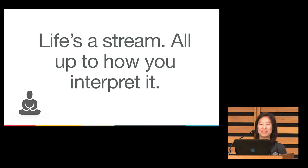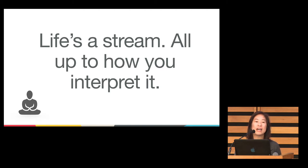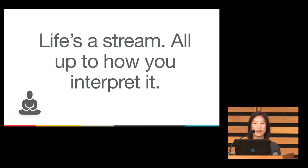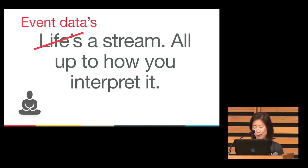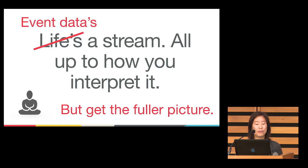Life's a stream — it's all up to how you interpret it. Event data is not about metrics. We've heard about how metrics are created as a result of events in the Make Data Count project, but events themselves are not metrics. The events themselves are metadata adding up to a fuller story. It's about the story that you want to tell — whether that is in a numerical, quantitative form, or in a qualitative form that imputes meaning to the actual metadata that you see. Event data is a stream: all up to how you interpret it. No metrics, but you get the fuller picture. That's event data in a pinch.